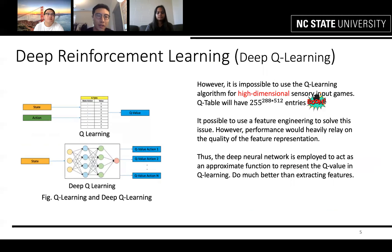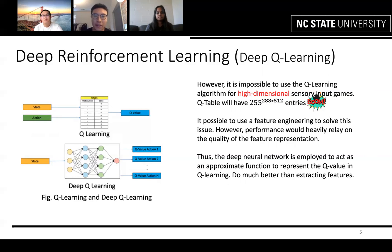However, the Q-learning algorithm is impossible for high-dimensional sensory input games. Feature engineering is a possible solution, but performance would heavily rely on the quality of the feature representation. Thus, a deep neural network is employed to act as an approximate function to represent the Q value in Q-learning.